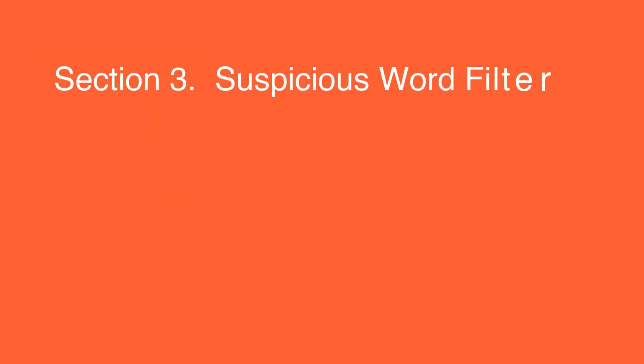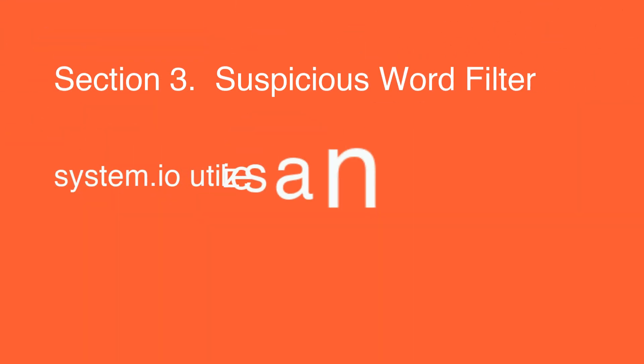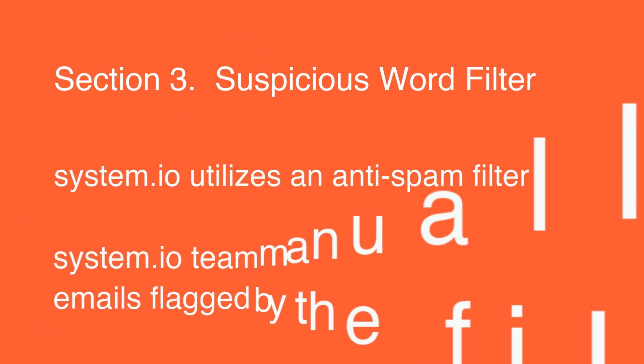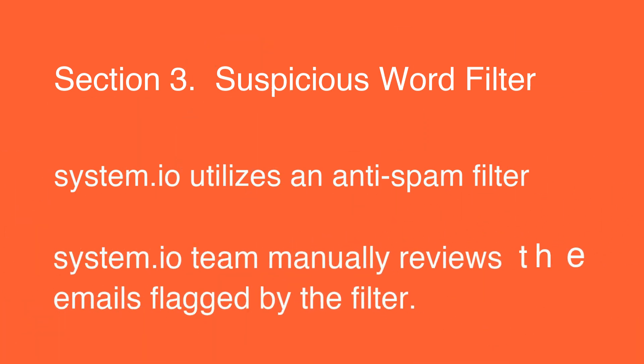Section 3: Suspicious Words Filter. Systeme.io utilizes an anti-spam filter that may suspend email sending if it detects suspicious words in the content. Our team manually reviews the emails flagged by the filter.